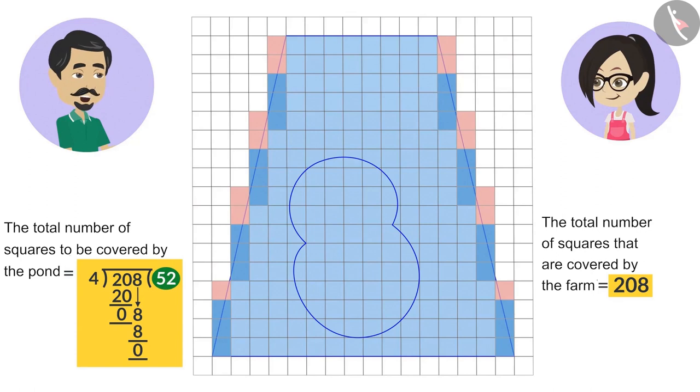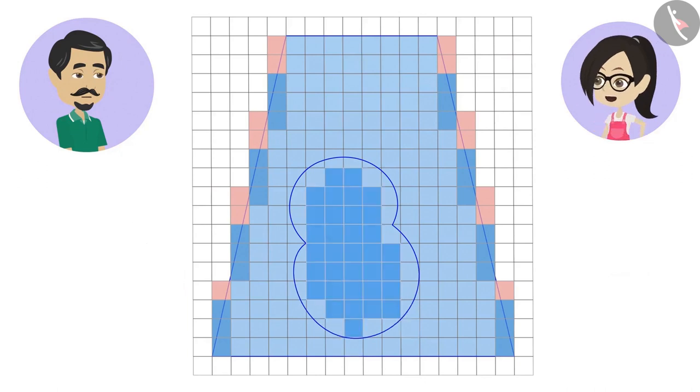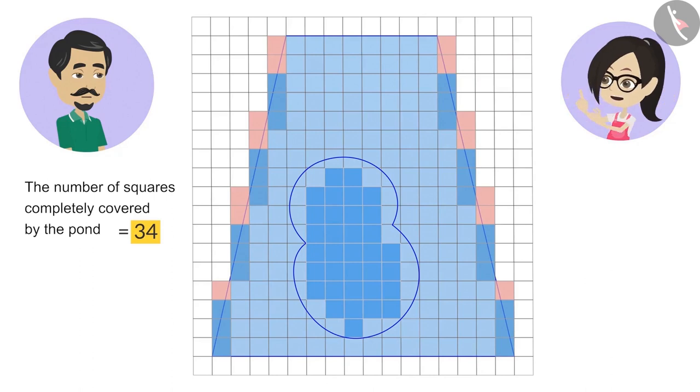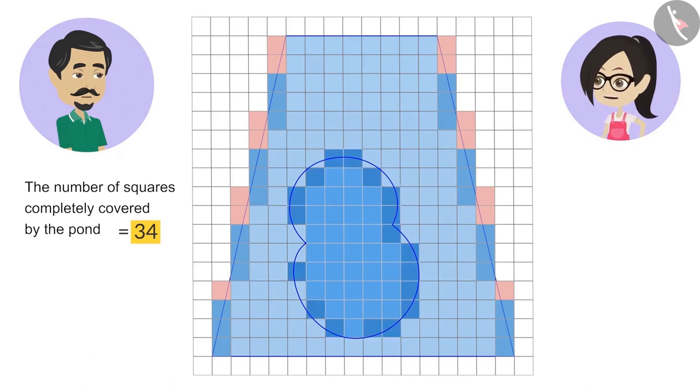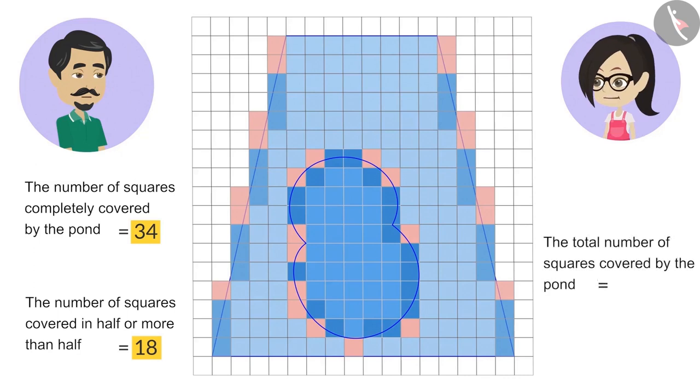Yes, you are absolutely right. Now we will count the squares covered by this pond. The number of squares that are covered completely is 34. Now we will count the squares that are covered in half or more than half. Their number is 18. The number of squares that are covered less than half are not counted.